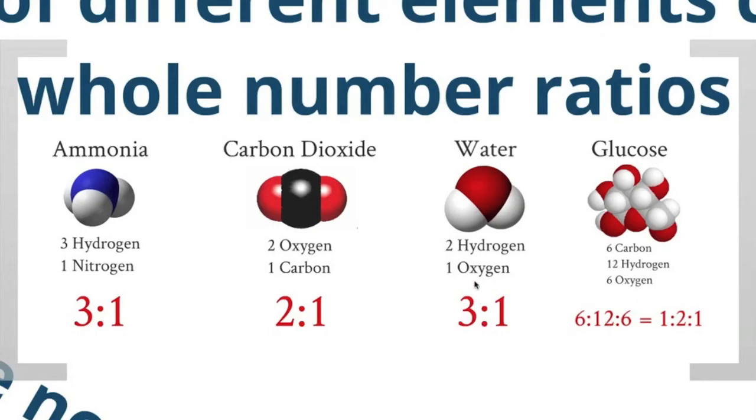This is supposed to be a two, because I have two hydrogens and one oxygen. So, disregard this three. This is supposed to be two to one. And finally, glucose.